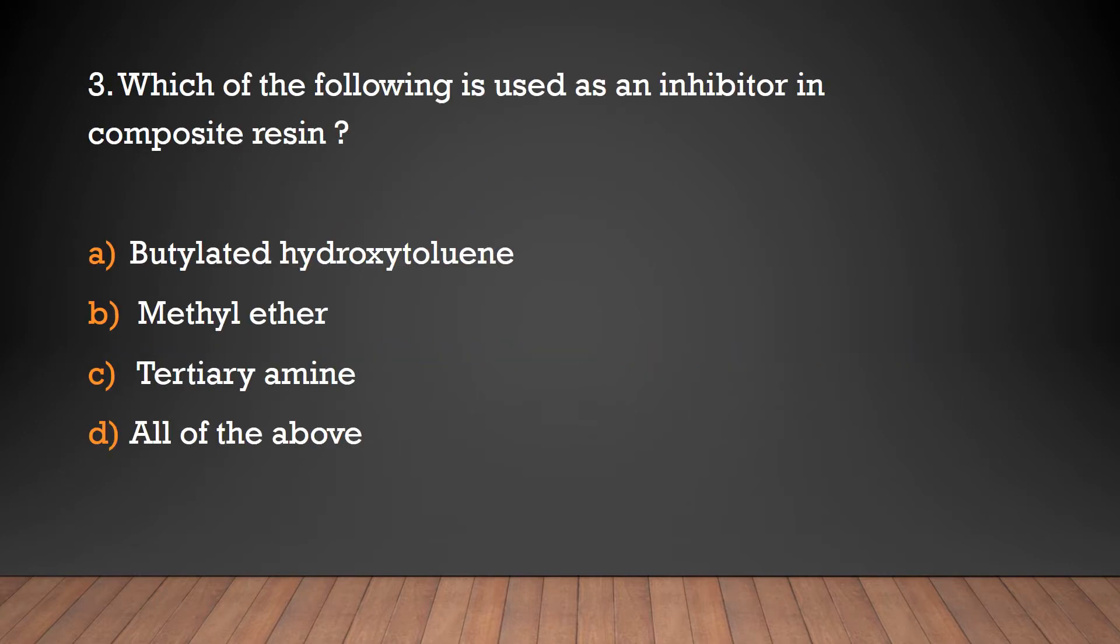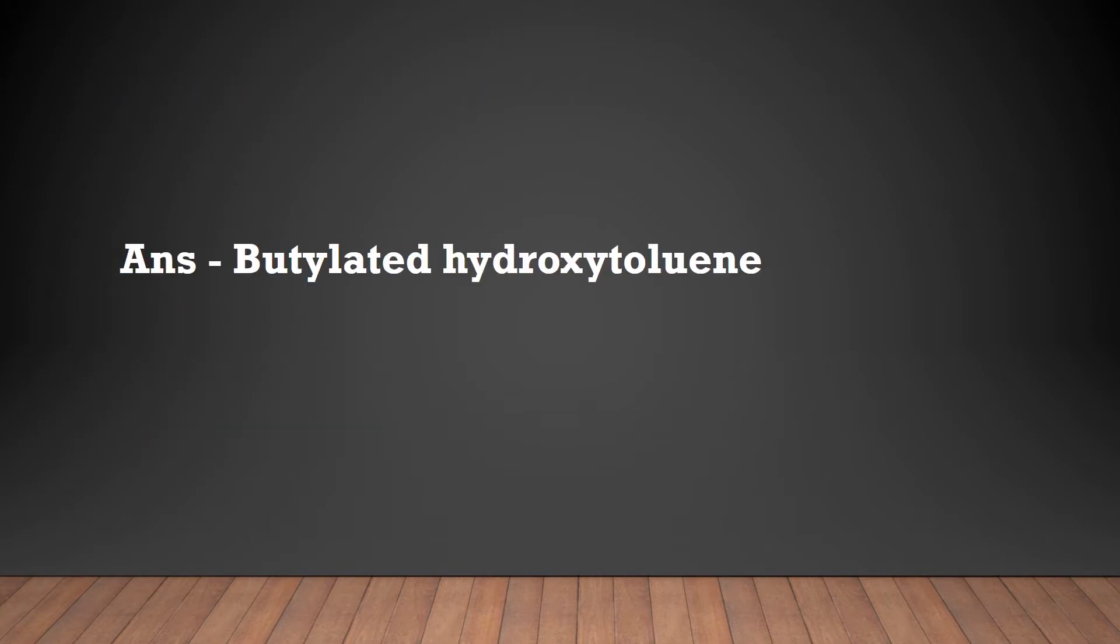Which of the following is used as inhibitor in composite resin? Butylated hydroxy toluene, methyl ether, tertiary amine, or all of the above? Butylated hydroxy toluene acts as inhibitor in composite resin.